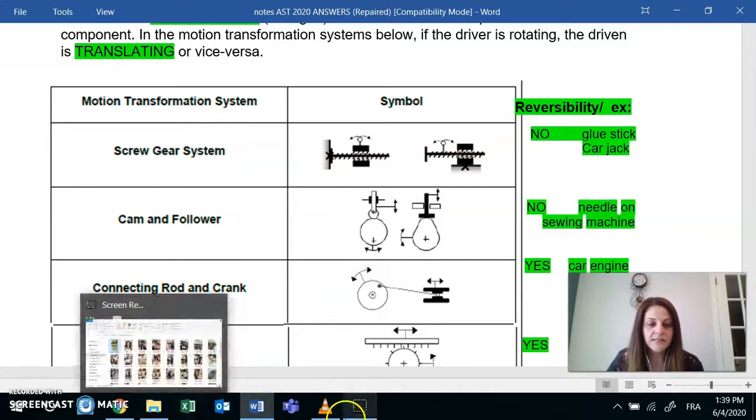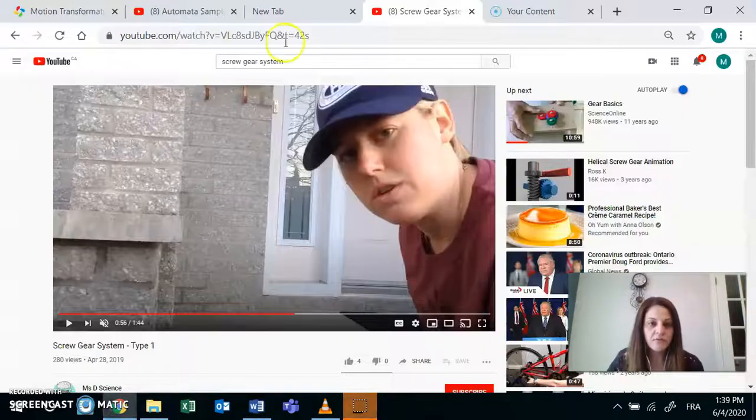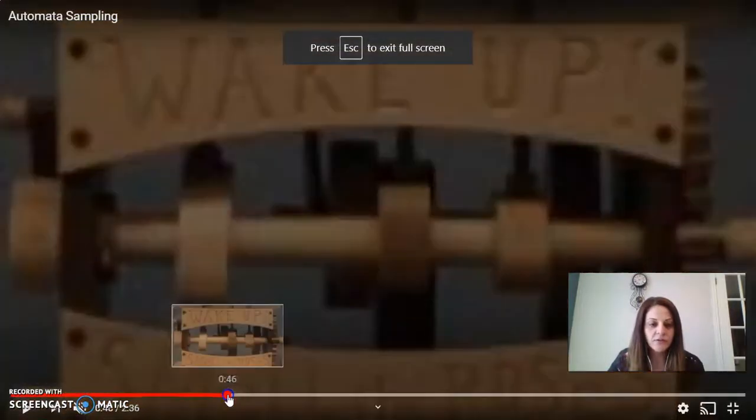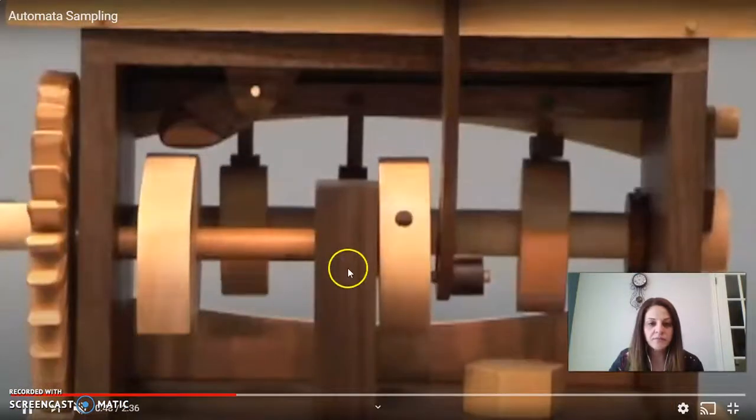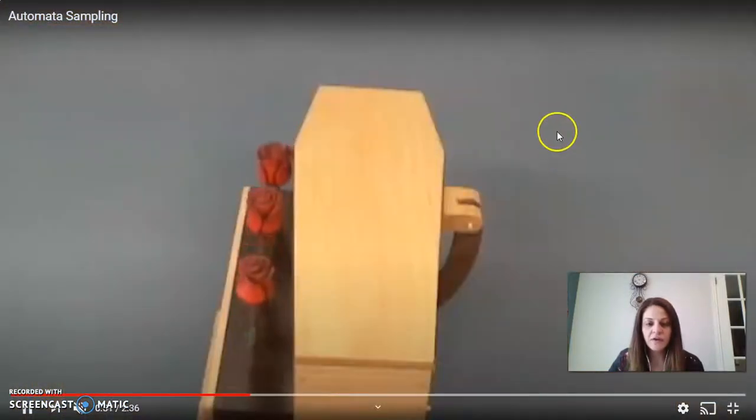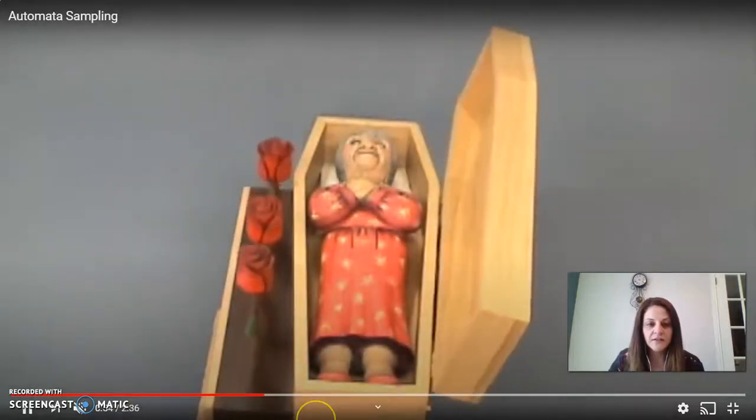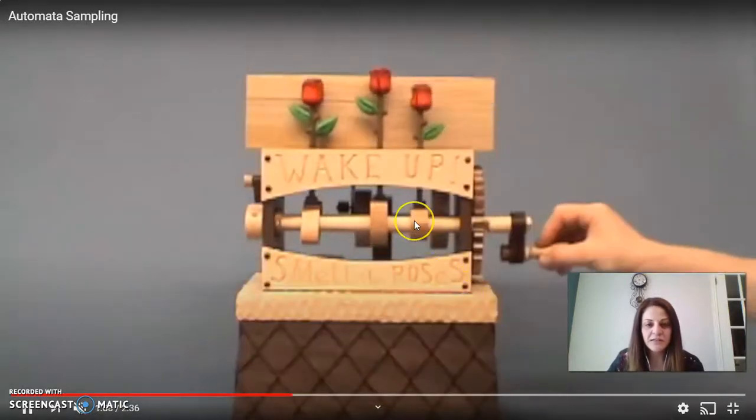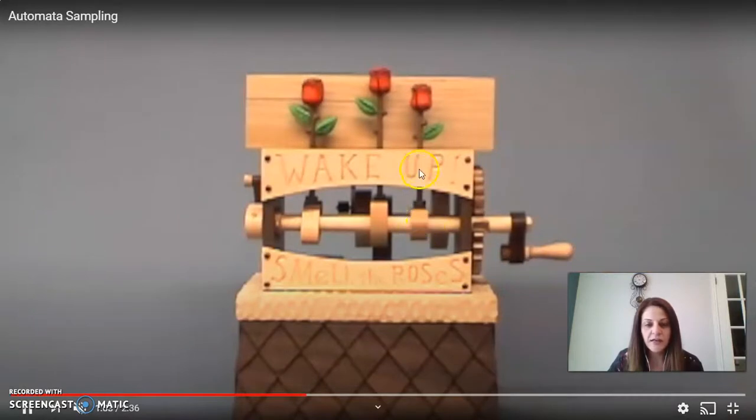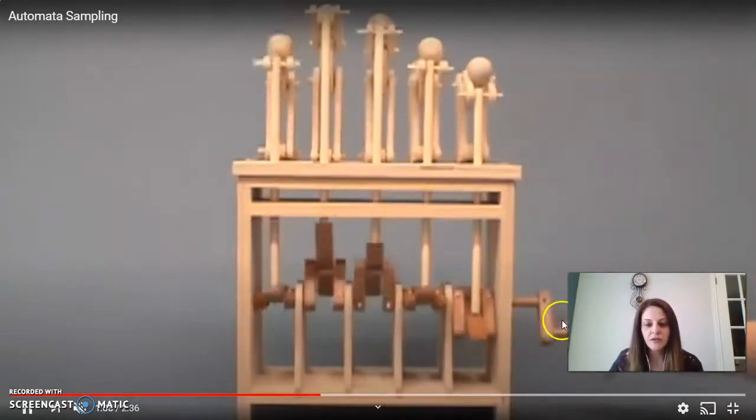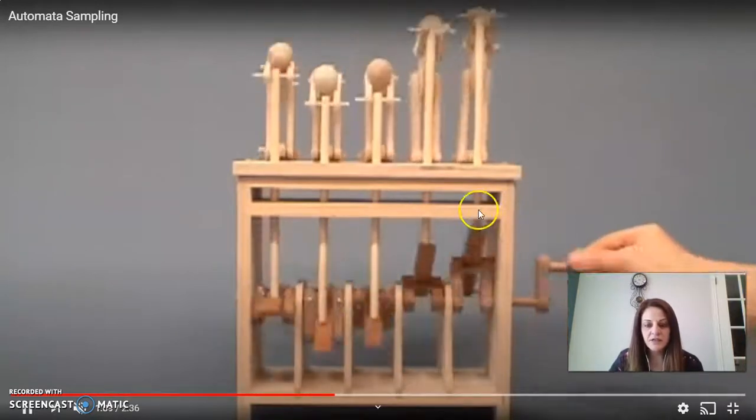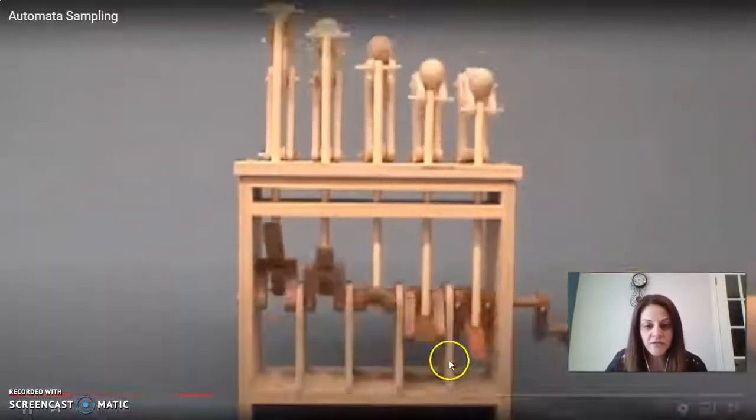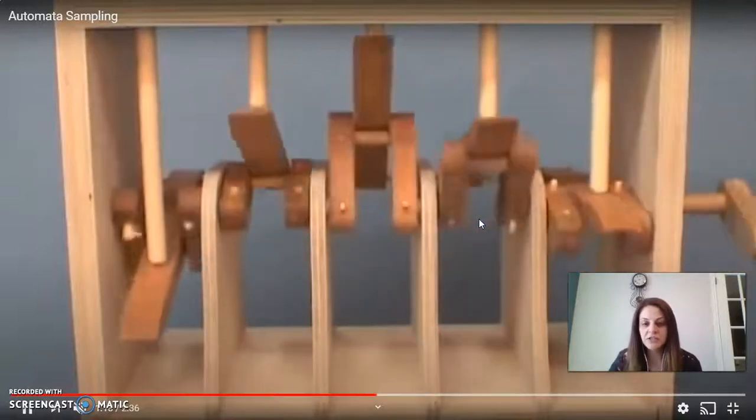So here's an example of a cam follower. Watch closely as we spin the bottom. On the top, you have followers that will go up and down, causing a little toy to move along. So just pay attention how you have rotation at the bottom, and on the top you have translation. Here's another example. We're rotating, and these sticks just go up and down.